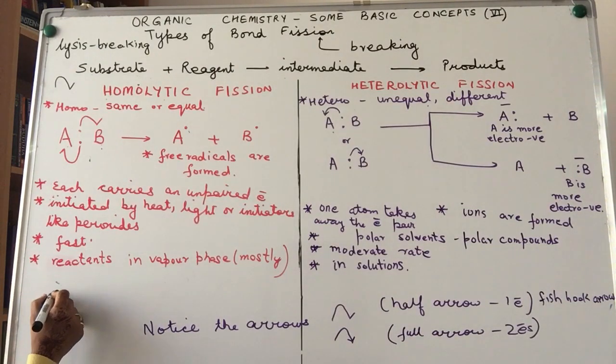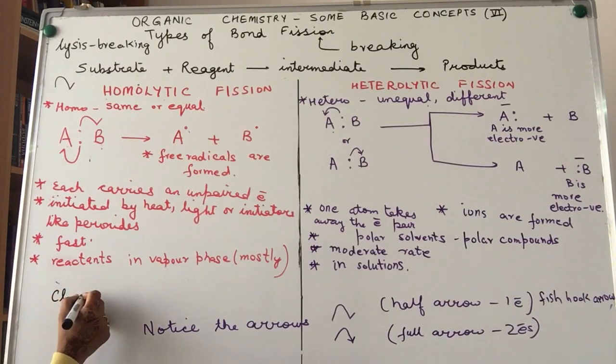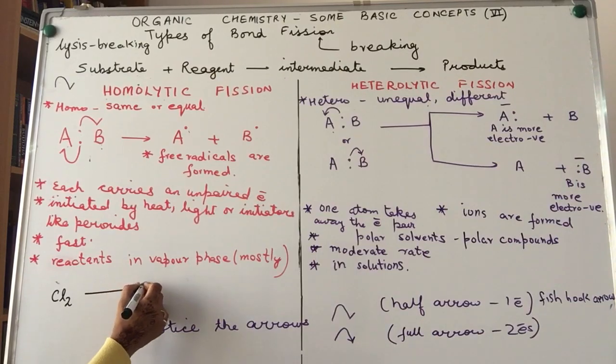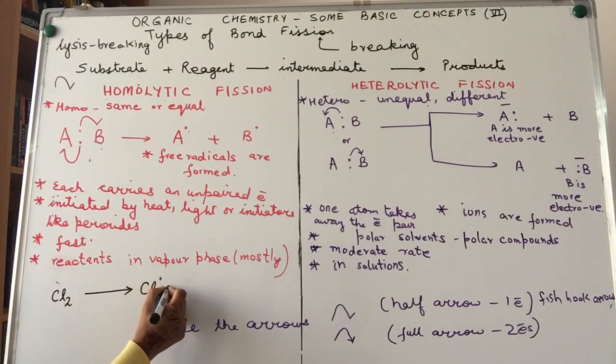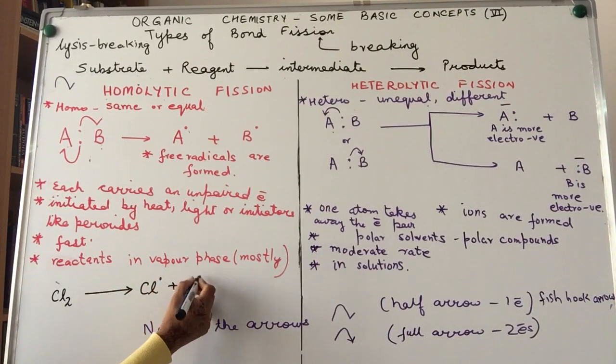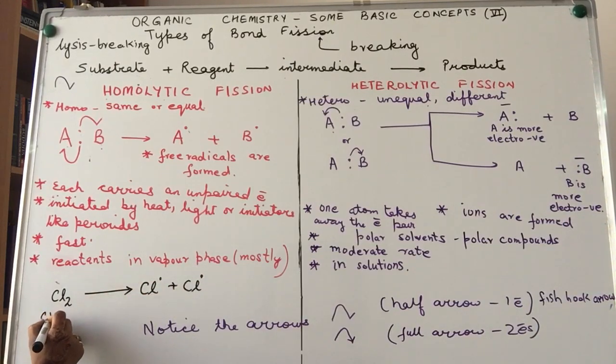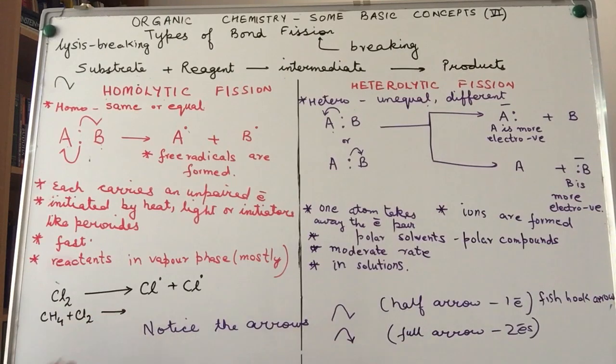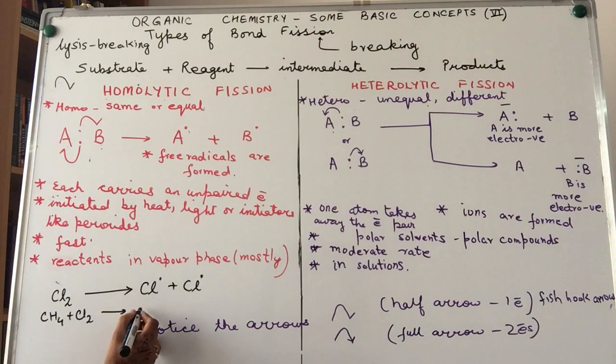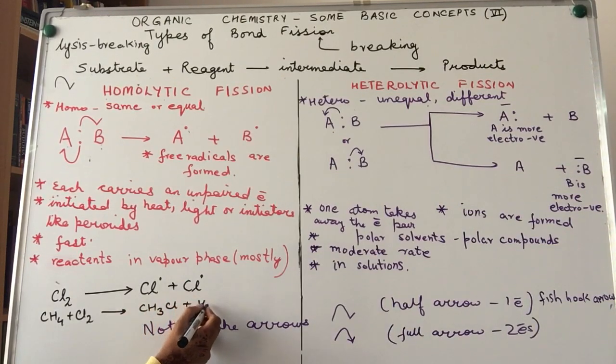A very simple example of free radical is when chlorine molecule will break down to give us chloride free radicals. When we are reacting methane with chlorine, the details of this reaction you will study under free radical substitution, but for the time being just understand that there is homolytic fission happening and free radicals are formed.